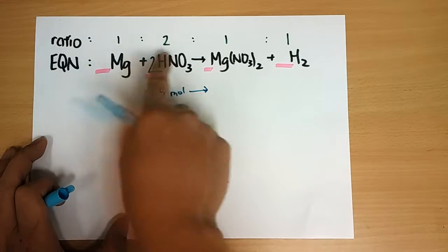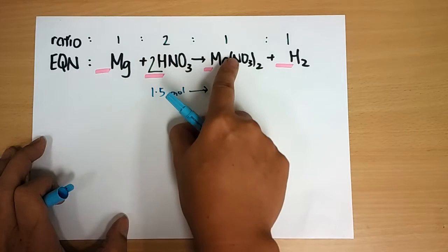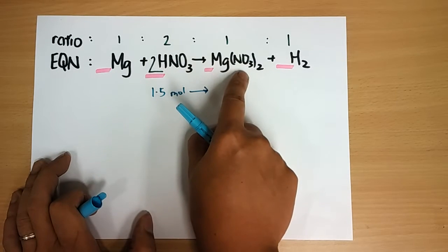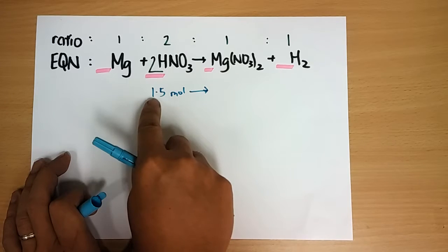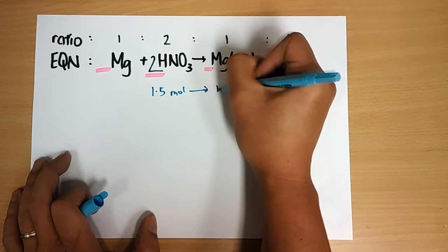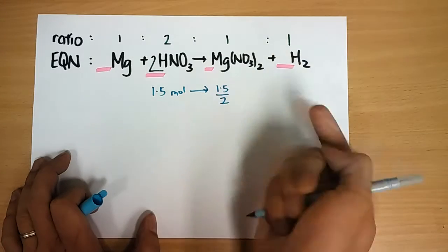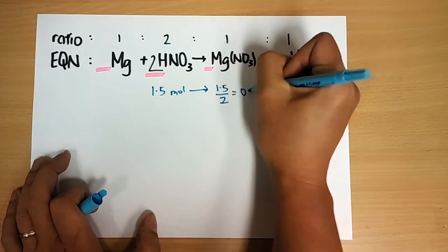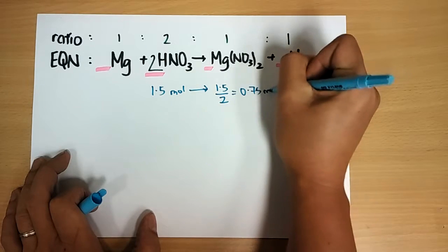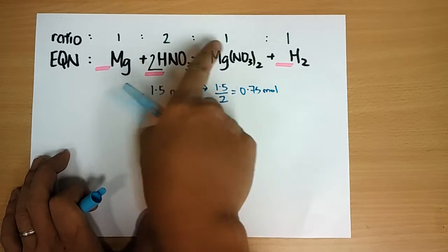In the ratio itself, the rule is 2 will produce 1. 2 moles of HNO3 will produce 1 mole of Mg(NO3)2. So if you have 1.5 moles, it means 1.5 divided by 2, which equals 0.75 moles. So basically, you get half the amount. This is 2 is to 1.